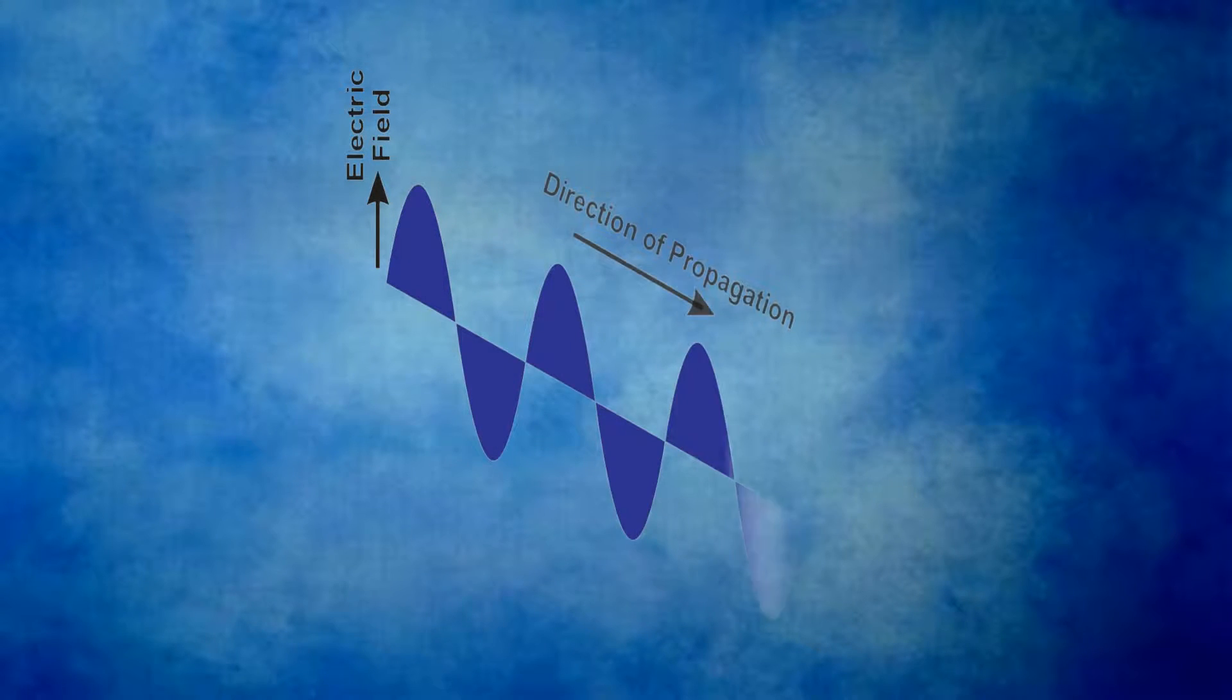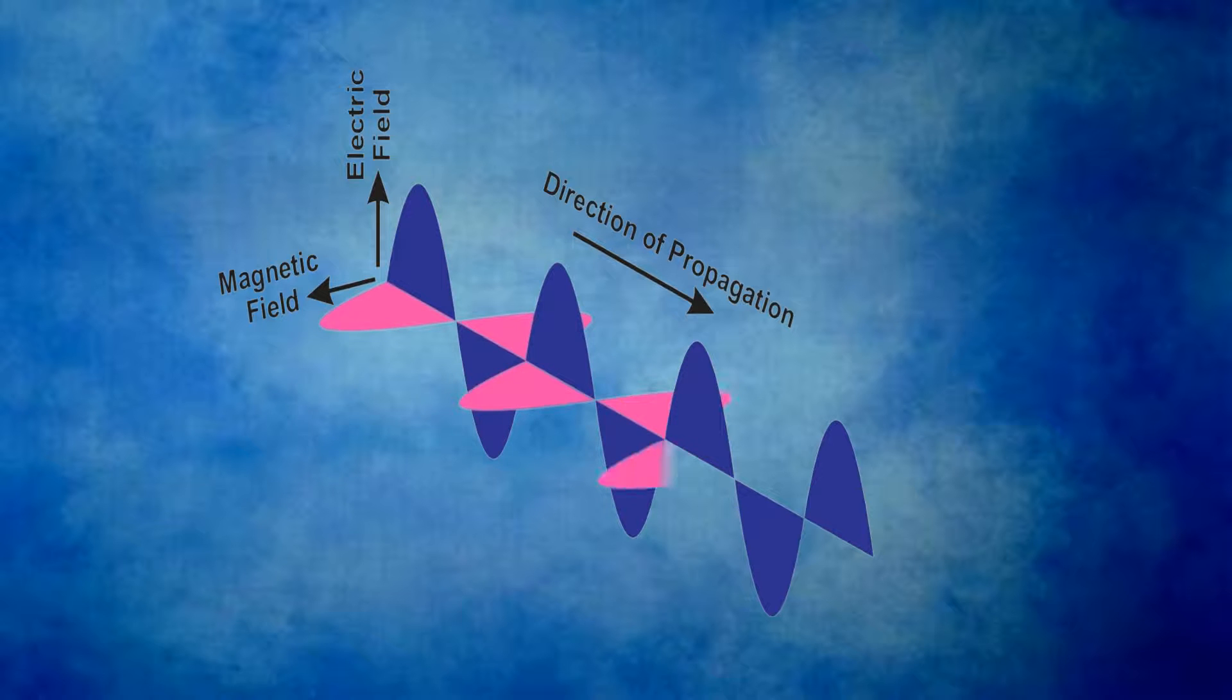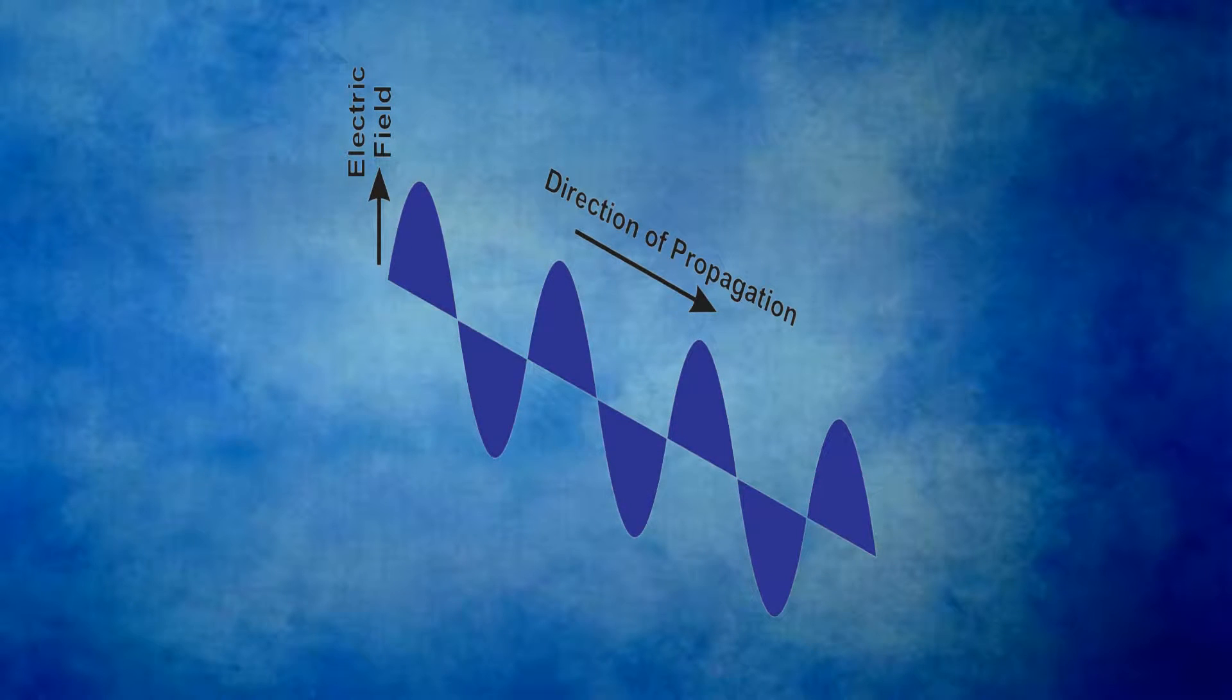It has an electric field, and at right angles to that it has a magnetic field. For simplicity in optics we usually represent only the electric field.